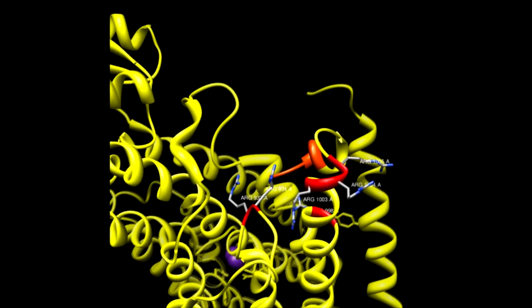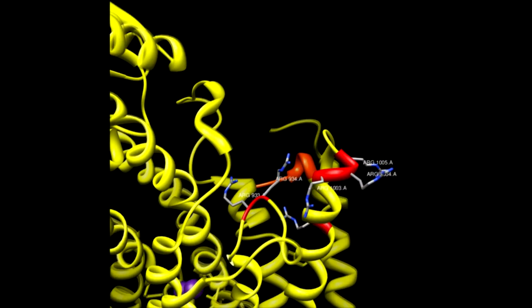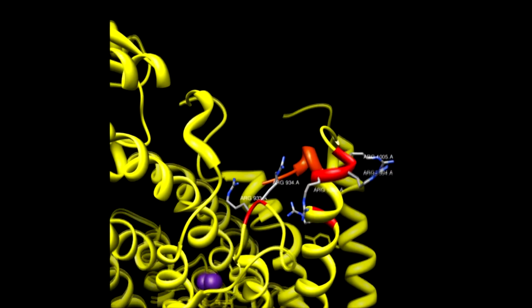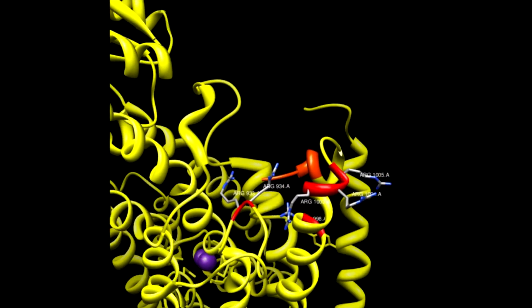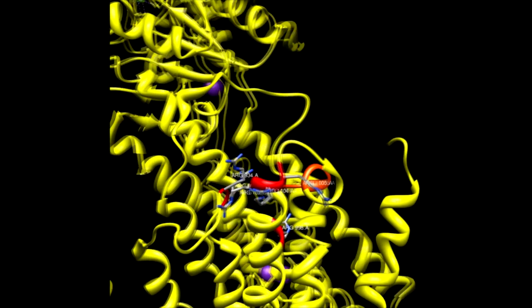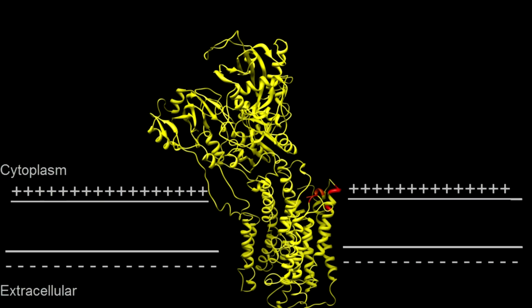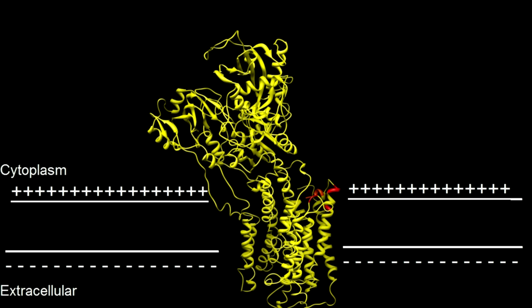Therefore, it is easy to postulate that changes in the electrical gradient between the extracellular fluid and the cytoplasm will induce changes in these residues. Shown here is an example of what would happen if the cytoplasm, which is normally negative, would become positive. This would repulse the concentrated positive charges near the C-terminus, pushing the helix down away from the positive charge.